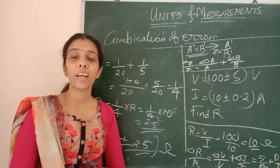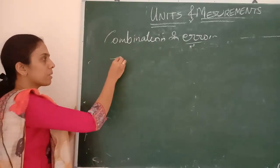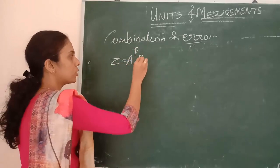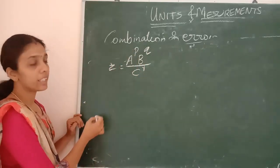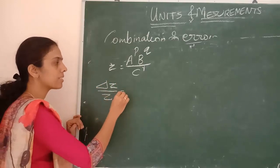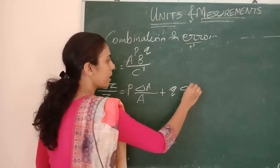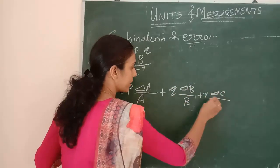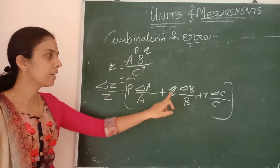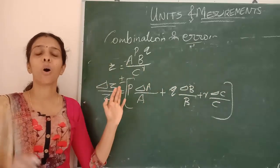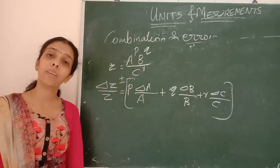Next we are going to find out the error when considering powers. If Z equals A to the power P, times B to the power Q, times C to the power R, then delta Z by Z equals P into delta A by A plus Q into delta B by B plus R into delta C by C. All these relative errors add up.